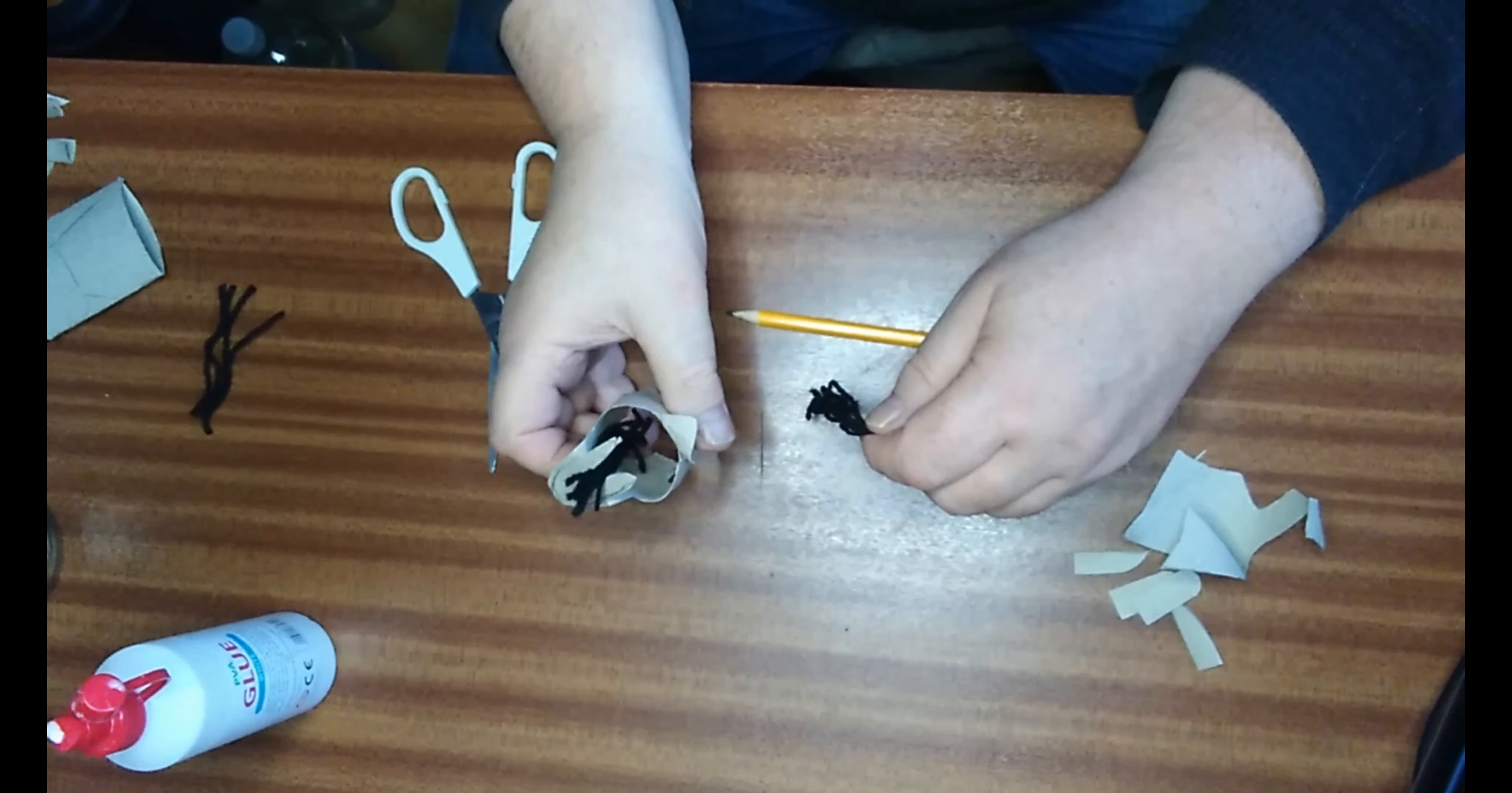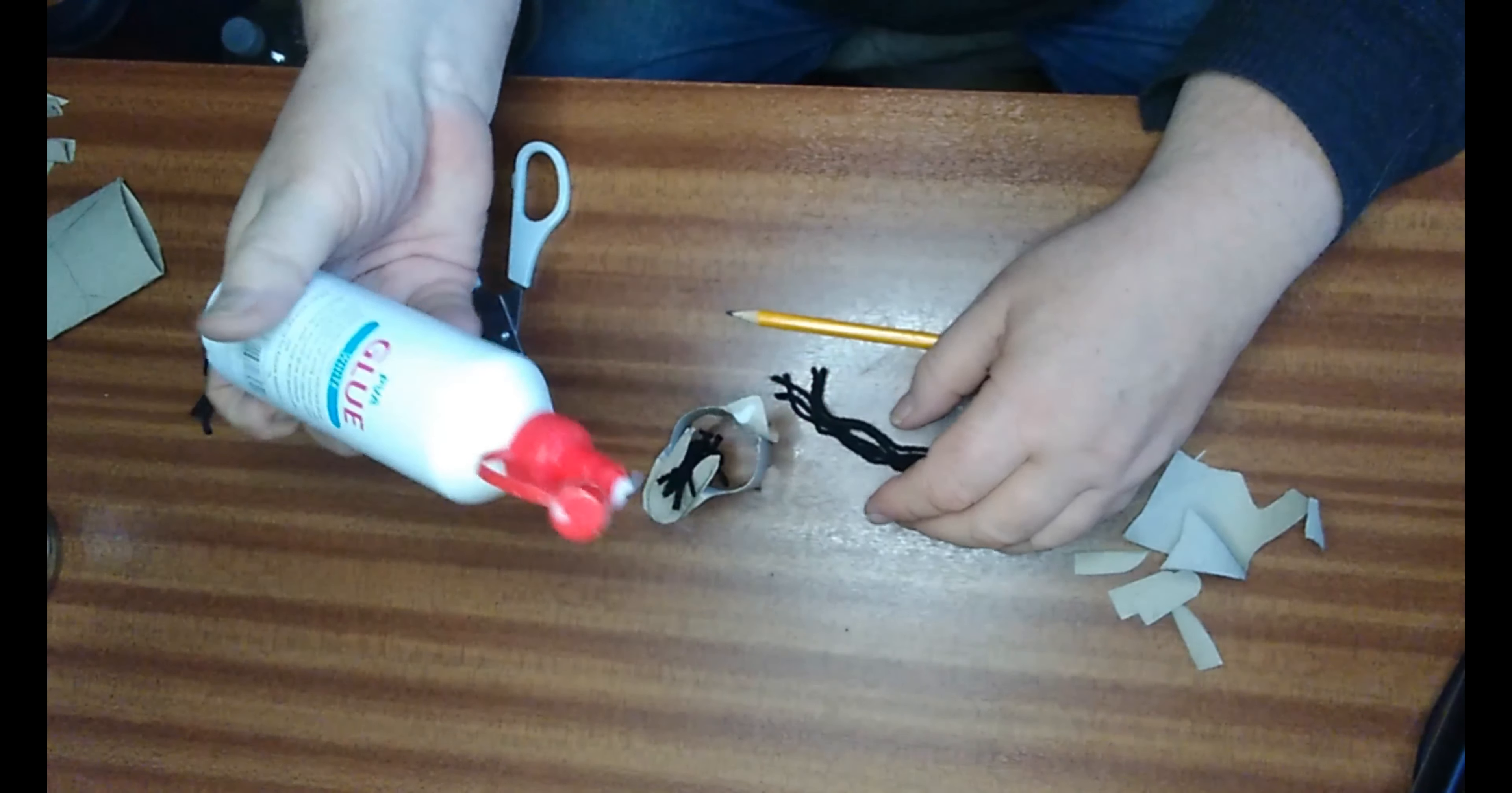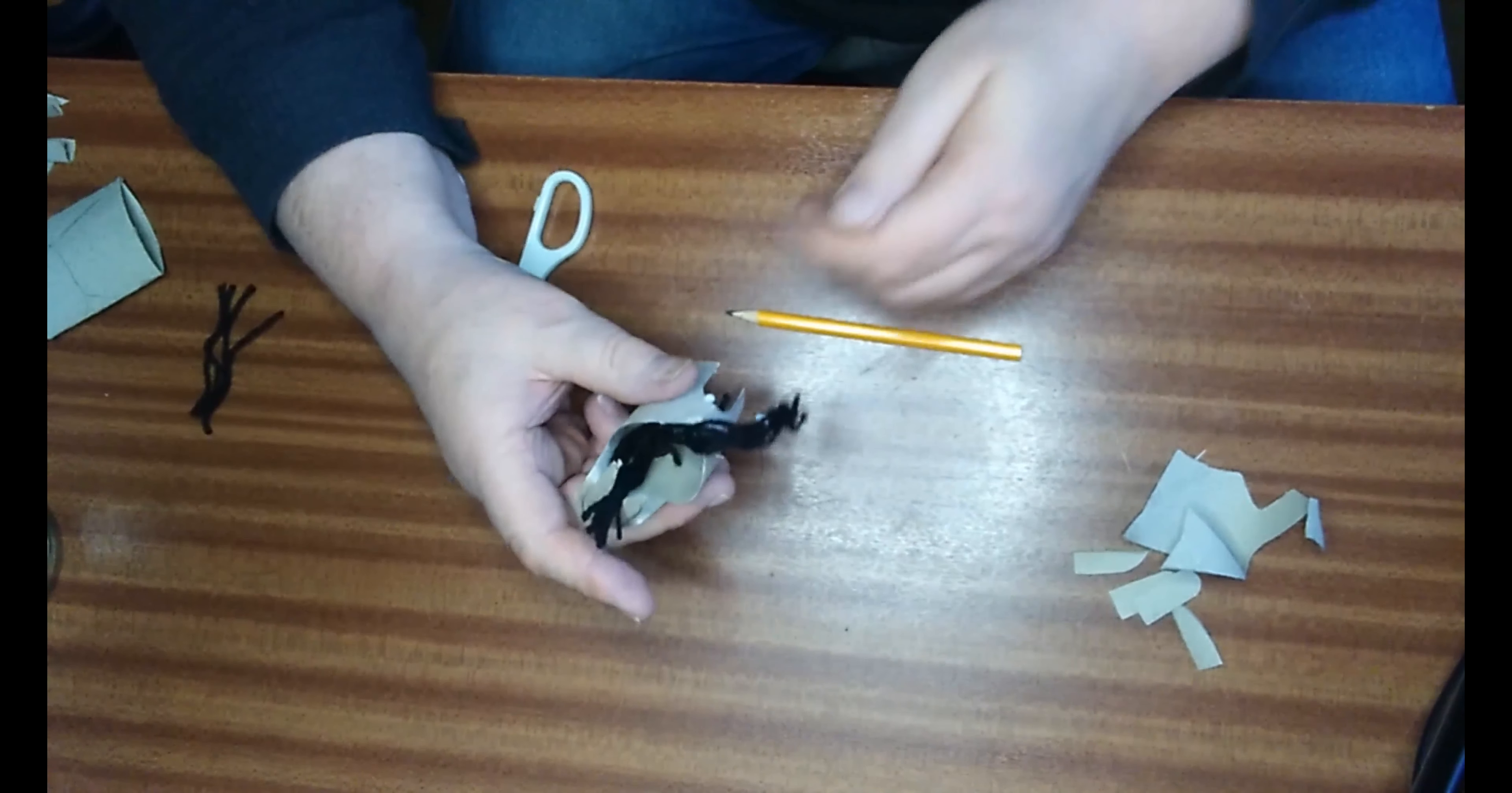And just trim it to tidy it up. There's one thing left to do, and that's using the wool. We're going to give him a mane and a tail. So I've stuck it on there to the inside of the tube, and now I'm going to glue the tail.